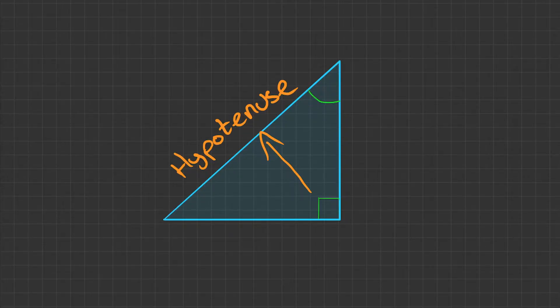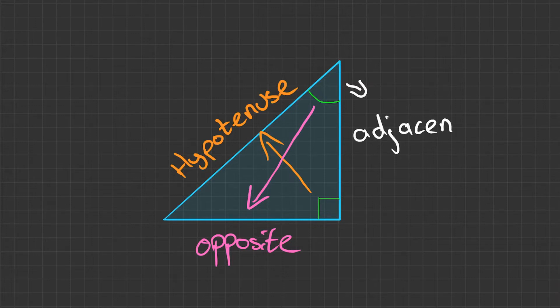But unlike Pythagoras, the two side lengths are in very specific places. The first side, which is nice and simple, is opposite this given angle. Now we'll call this the opposite side, and the final side length is adjacent to this given angle, so we'll call this the adjacent side.